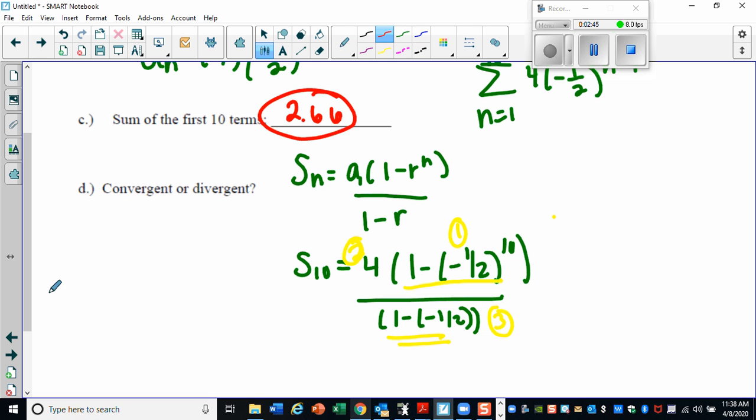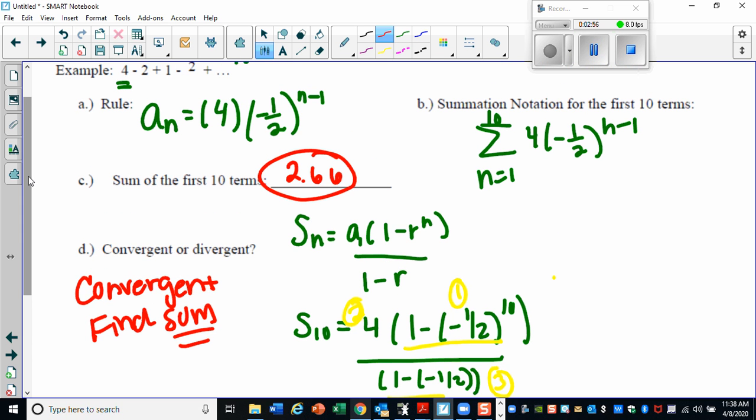And that's going to give you your sum of 2.66. Now in this case, this is a convergent series. It's convergent because I can find the sum. I can actually find the sum. So you're just going to want to make sure convergent means you can find the sum. Divergent means you cannot find the sum. And we'll talk a little bit more about infinite geometric series and sometimes they're convergent and sometimes they're divergent in the next lesson.